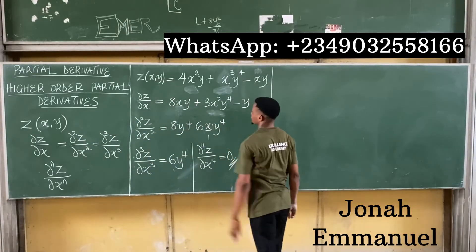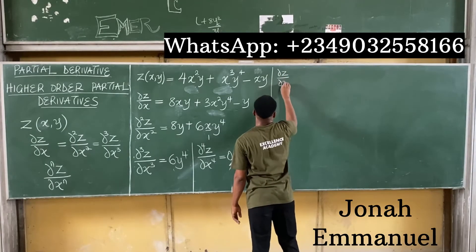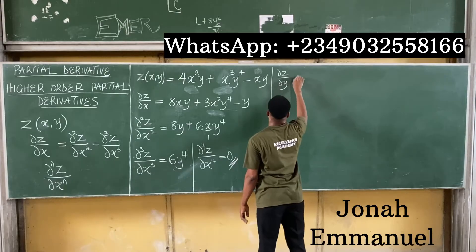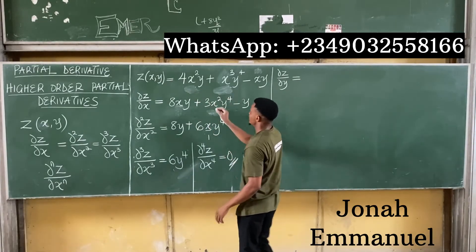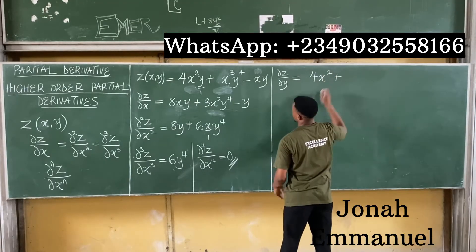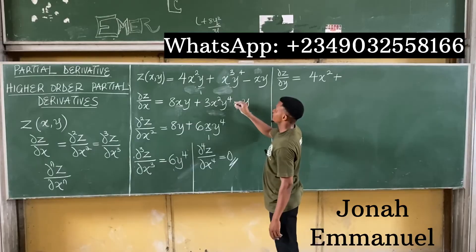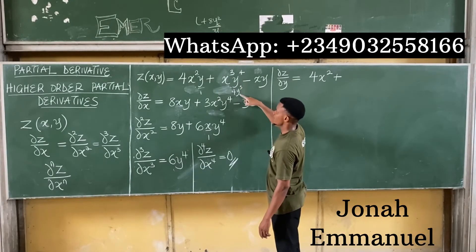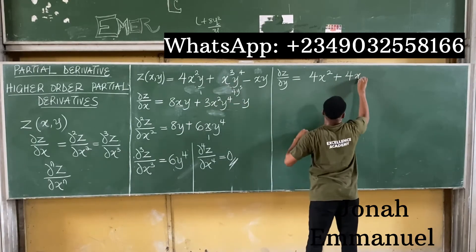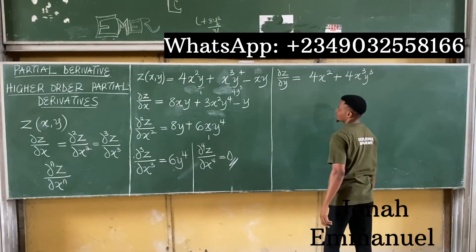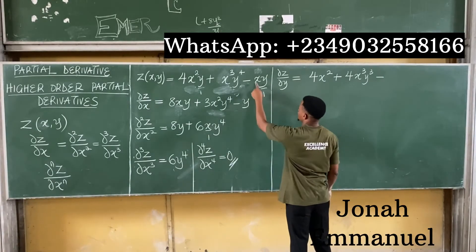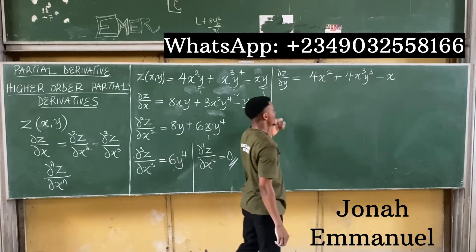Now let's try the same for y. For partial z over partial y, focus on y and leave x. Differentiating y in 4x squared y gives 1; 1 times 4x squared gives 4x squared. Then differentiating y to the power 4 in x cubed y to the power 4 gives 4y to the power 3; 4y to the power 3 times x cubed gives 4x cubed y to the power 3. Differentiating minus xy with respect to y gives minus x. So partial z over partial y equals 4x squared plus 4x cubed y to the power 3 minus x.